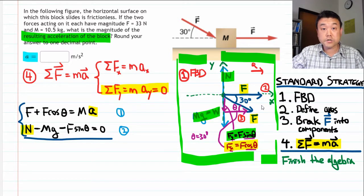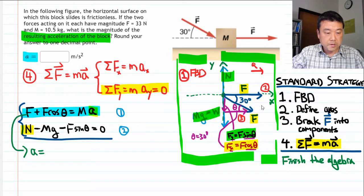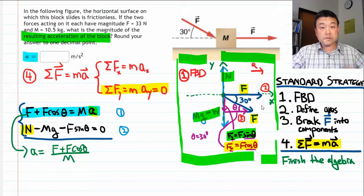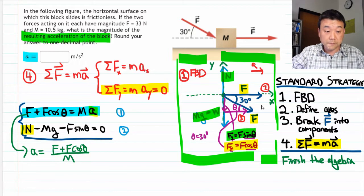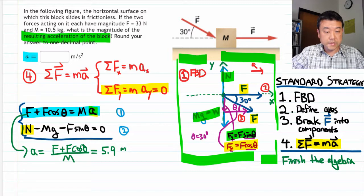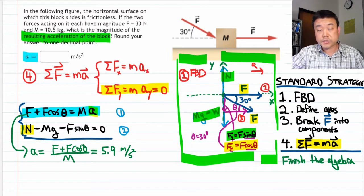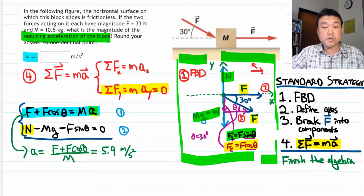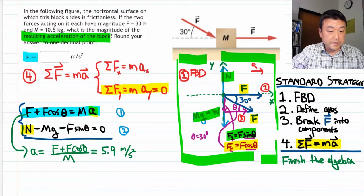So the question asks for the acceleration. So what we should do is solve equation one for acceleration a and see what we get. I get acceleration is equal to F plus F cosine theta divided by M. And if you plug in the numbers given in this problem, you will get 5.9 meters per second squared. The unit of Newton divided by kilogram gives you meters per second squared back. So that's the answer.